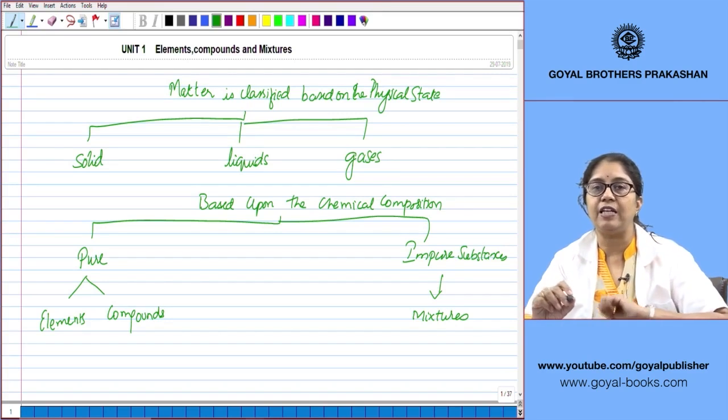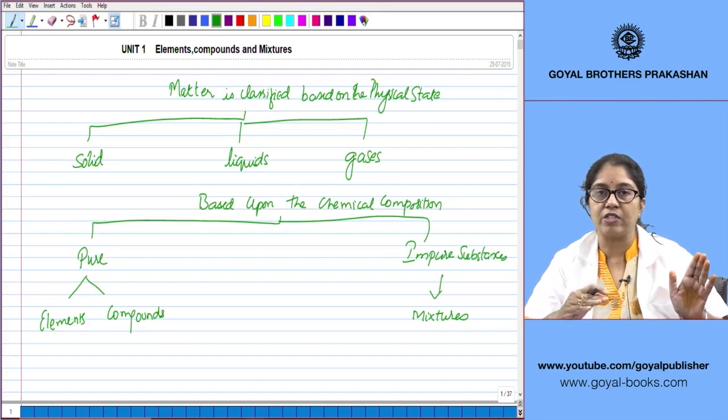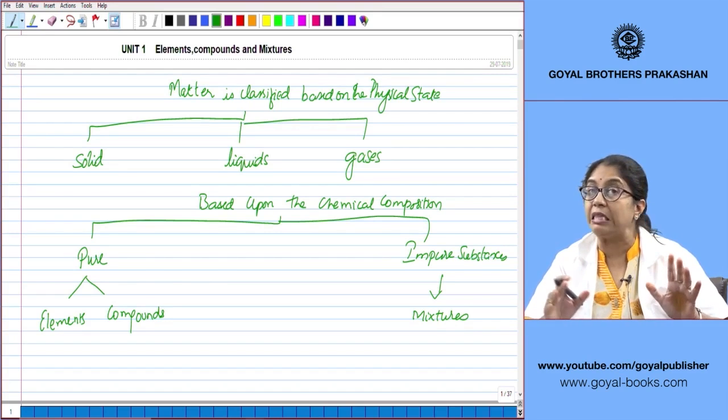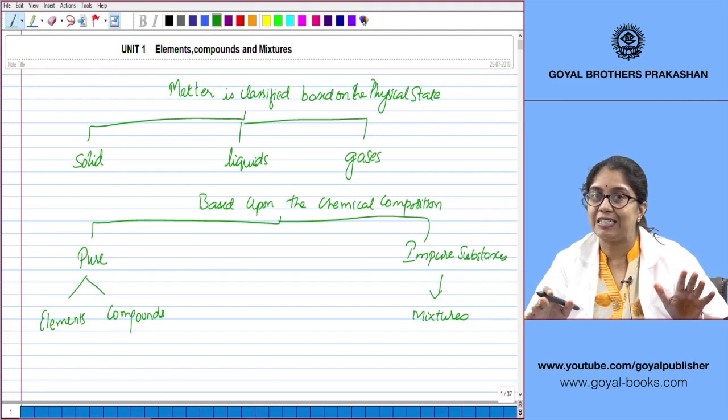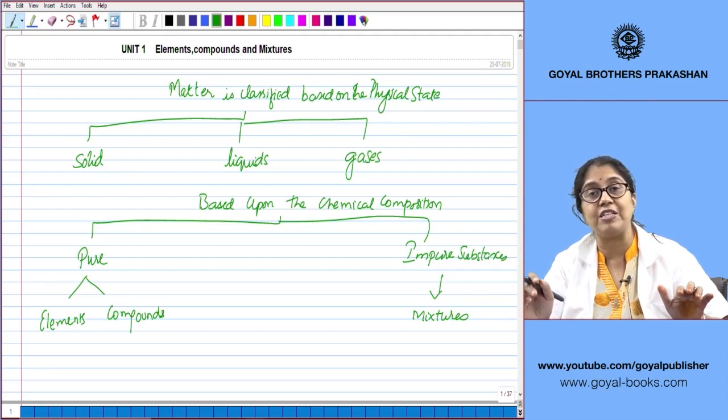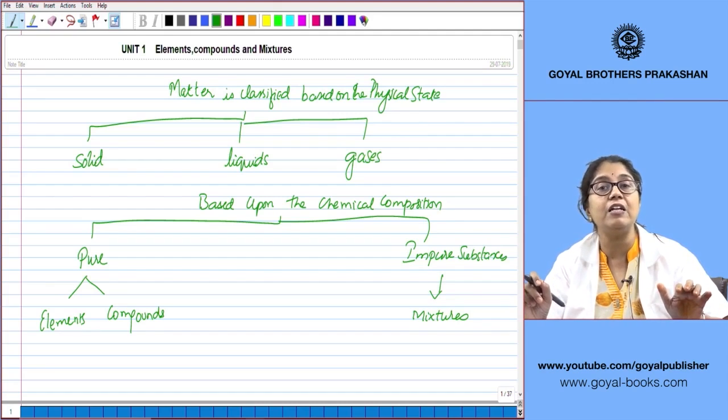Now you may have seen water and ethanol. Water and ethanol are both liquids at room temperature. Both are colorless. Yet though the physical state of these two substances is the same, they are different. Their properties are different. Why is it that their properties are different? It is because they differ in their chemical composition.